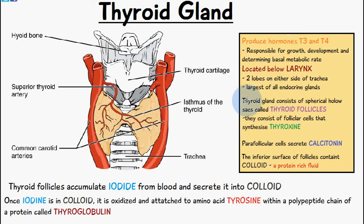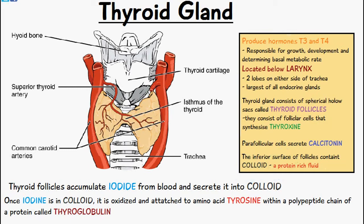The thyroid gland consists of spherical hollow sacs called thyroid follicles, which consist of follicular cells that synthesize thyroxine. We also have parafollicular cells, which secrete calcitonin. The inferior surfaces of the follicles contain colloid, which is a protein-rich fluid.